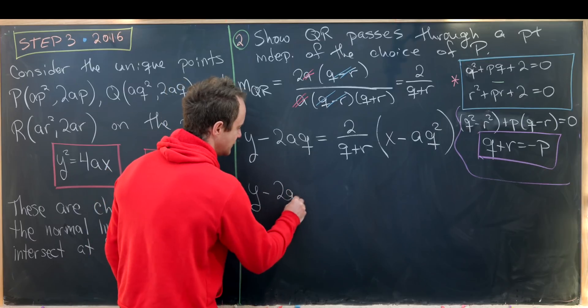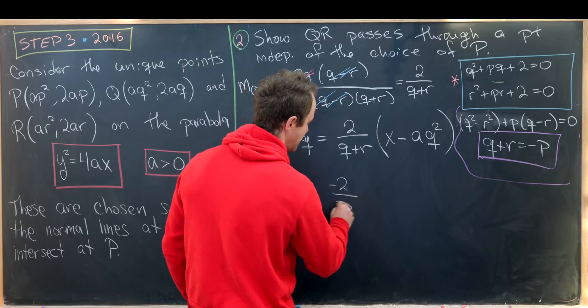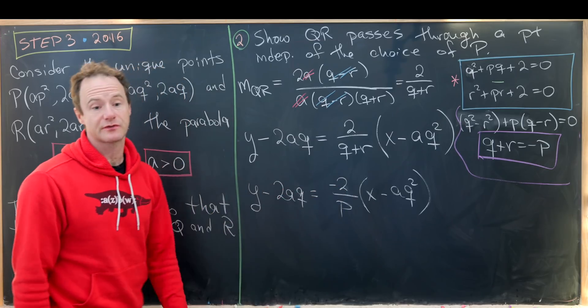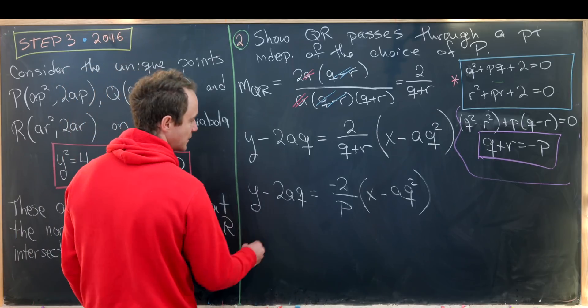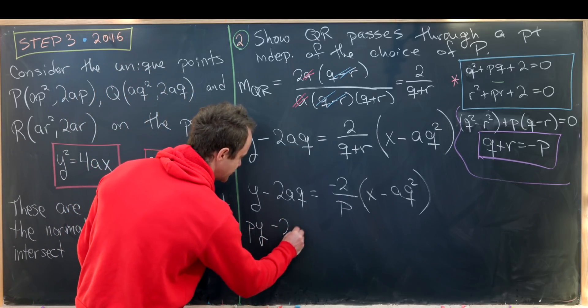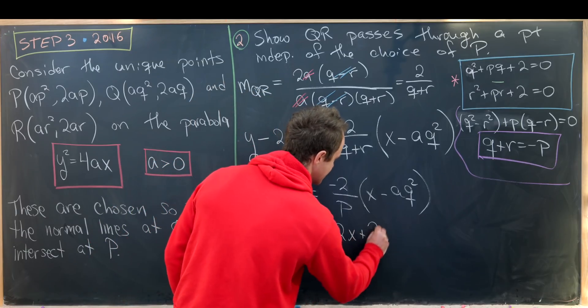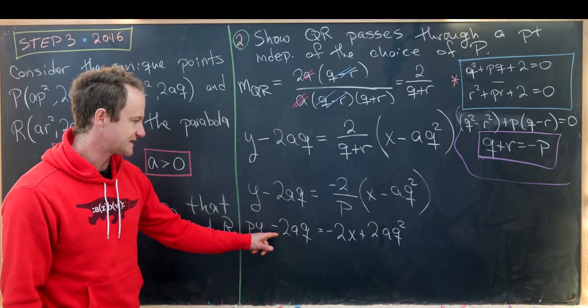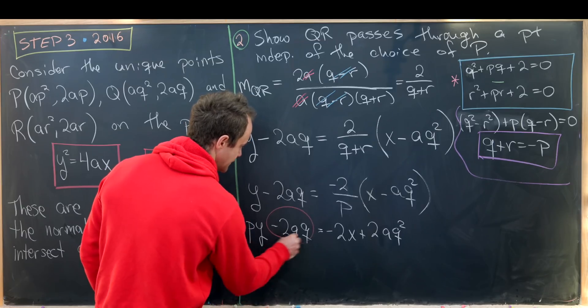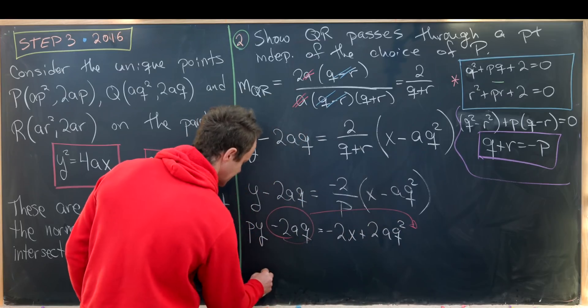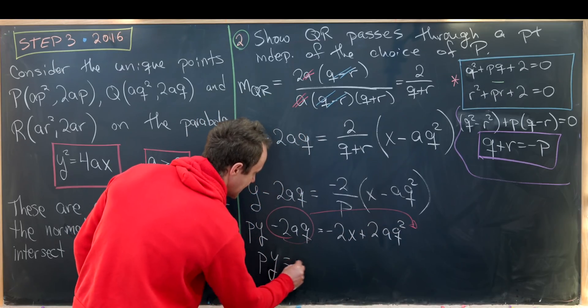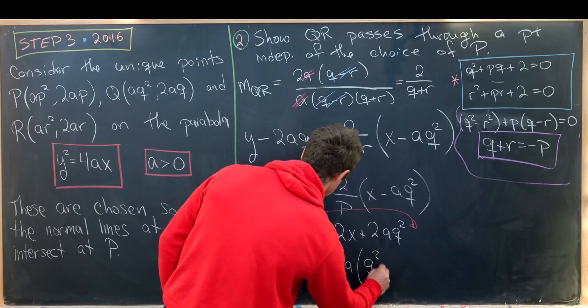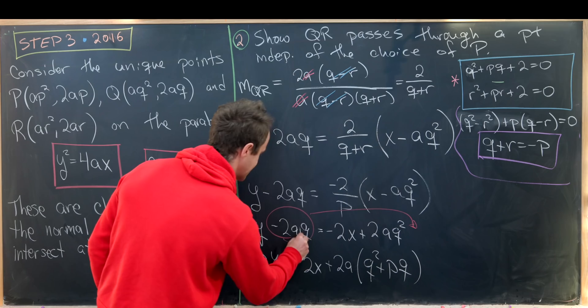So now we'll have Y - 2AQ = (-2/P)(X - AQ²). Let's multiply this P over and this 2 through to see if we can start simplifying. So if we do that we'll have PY - 2APQ = -2X + 2AQ².